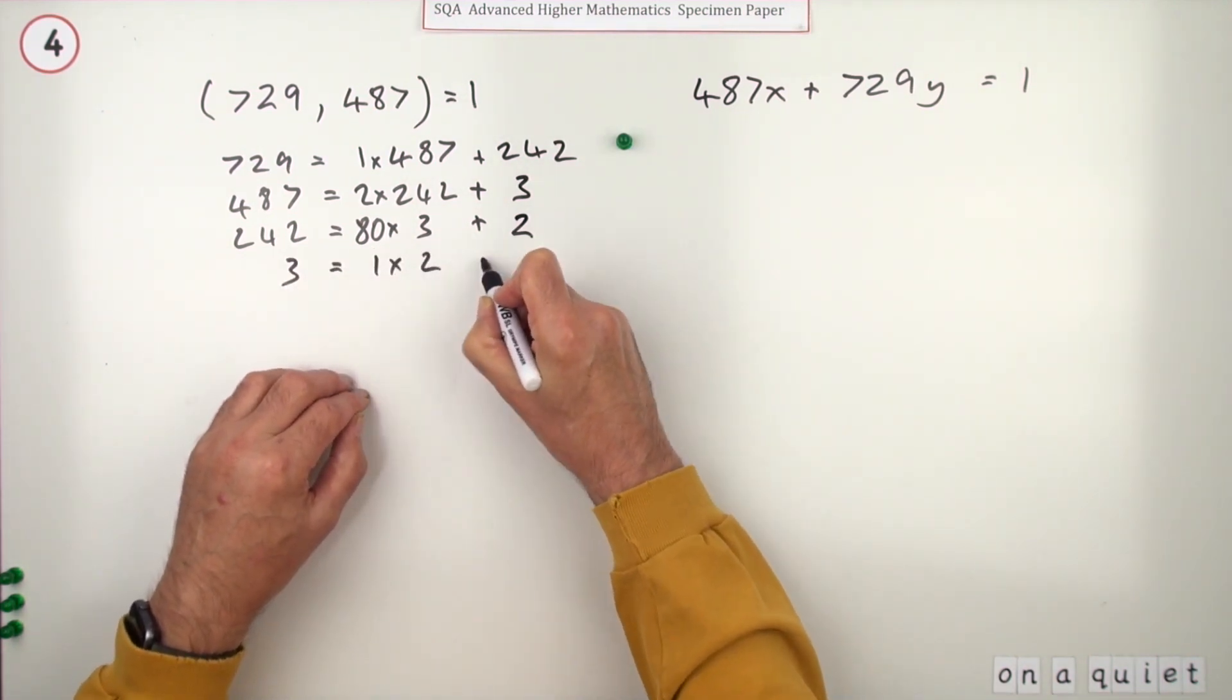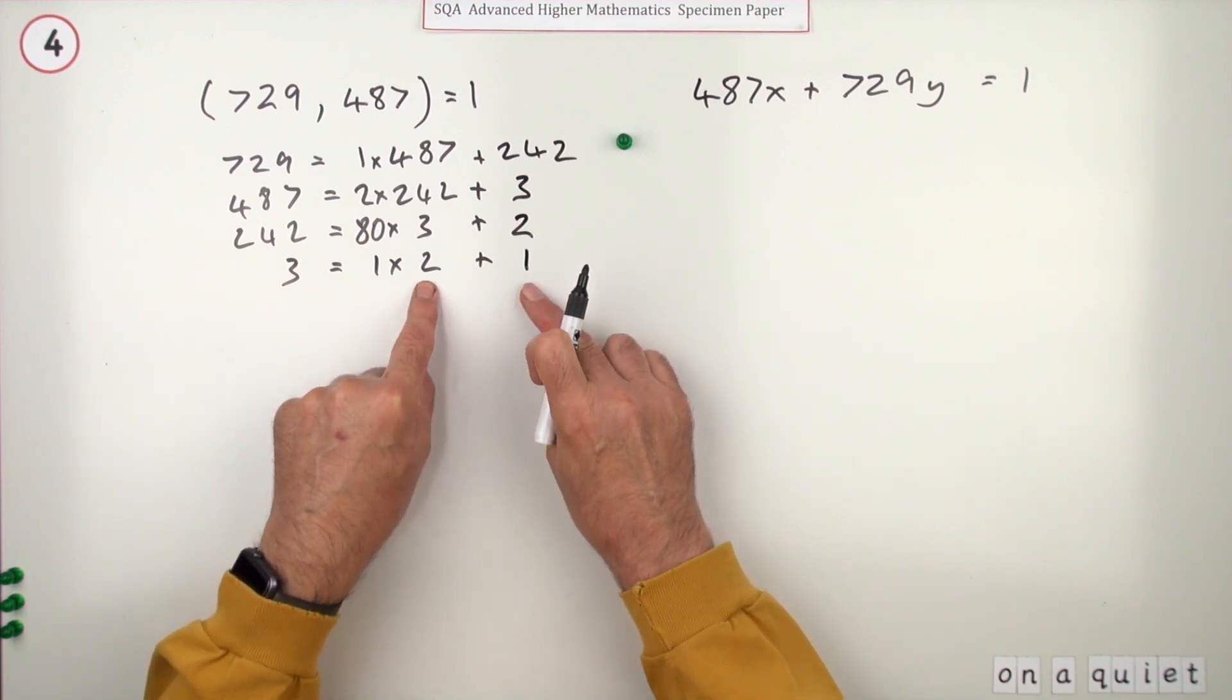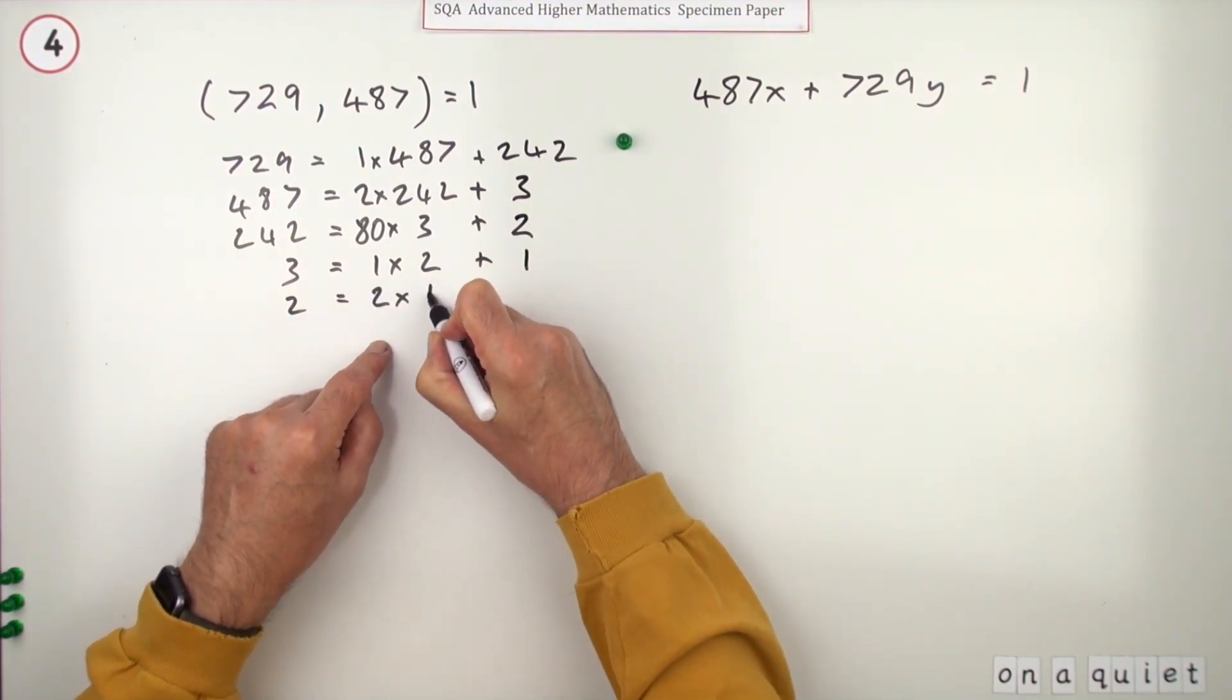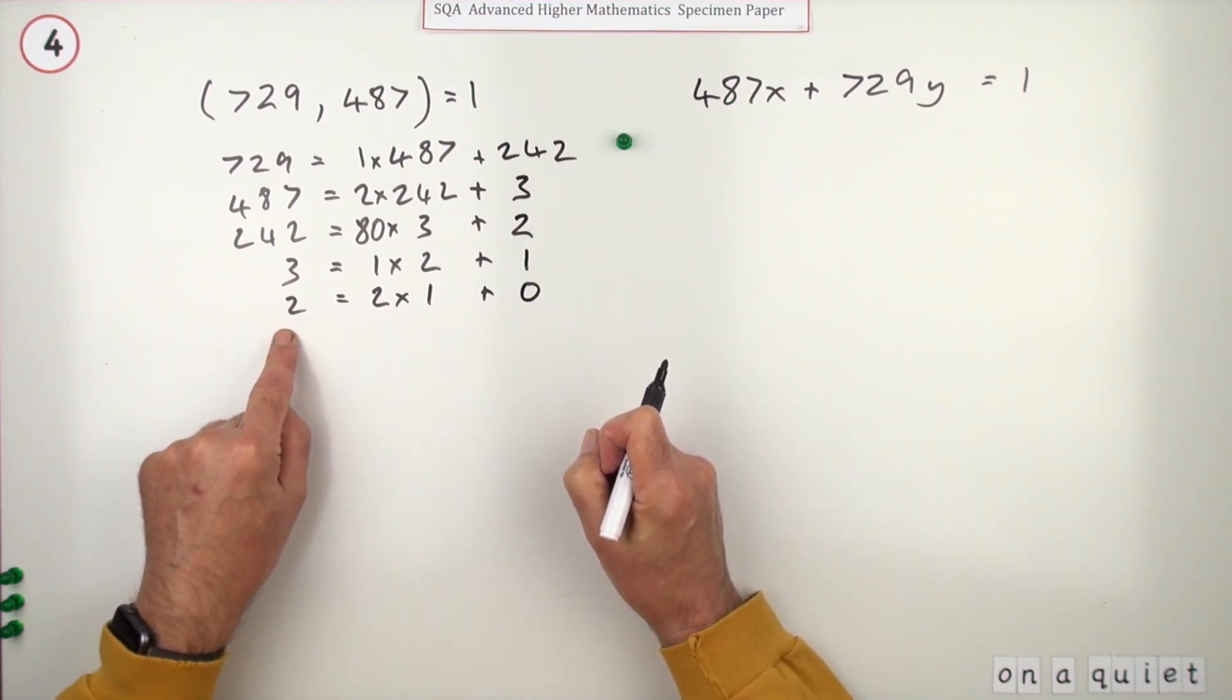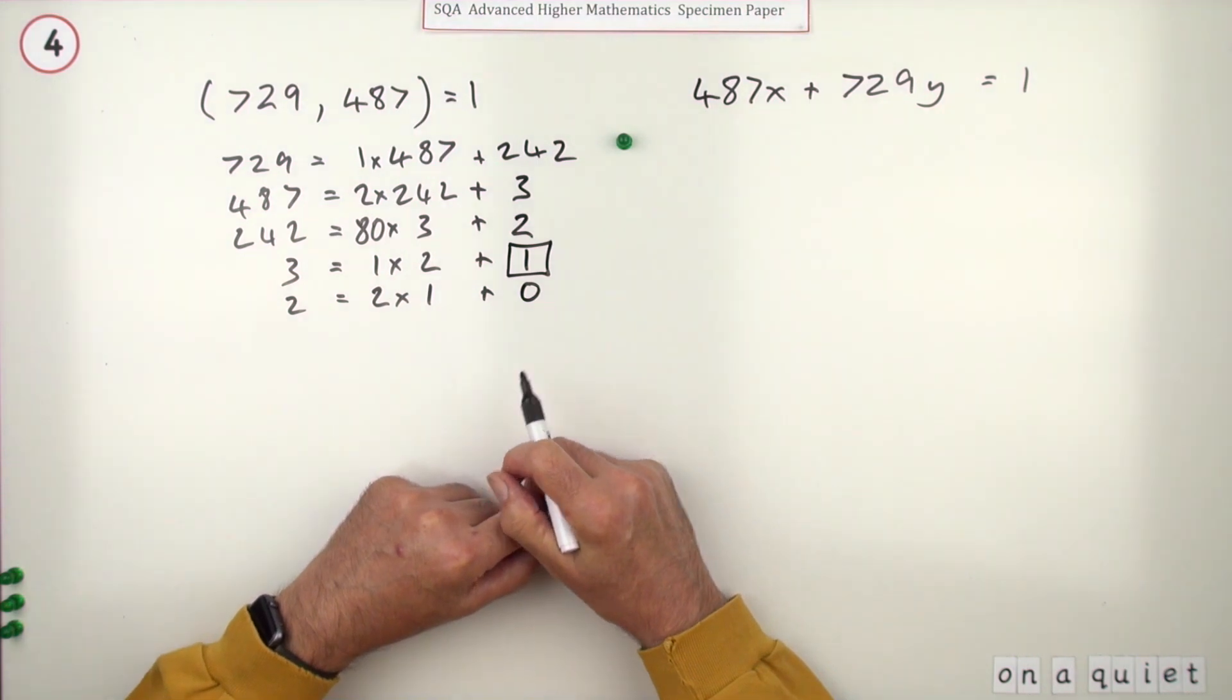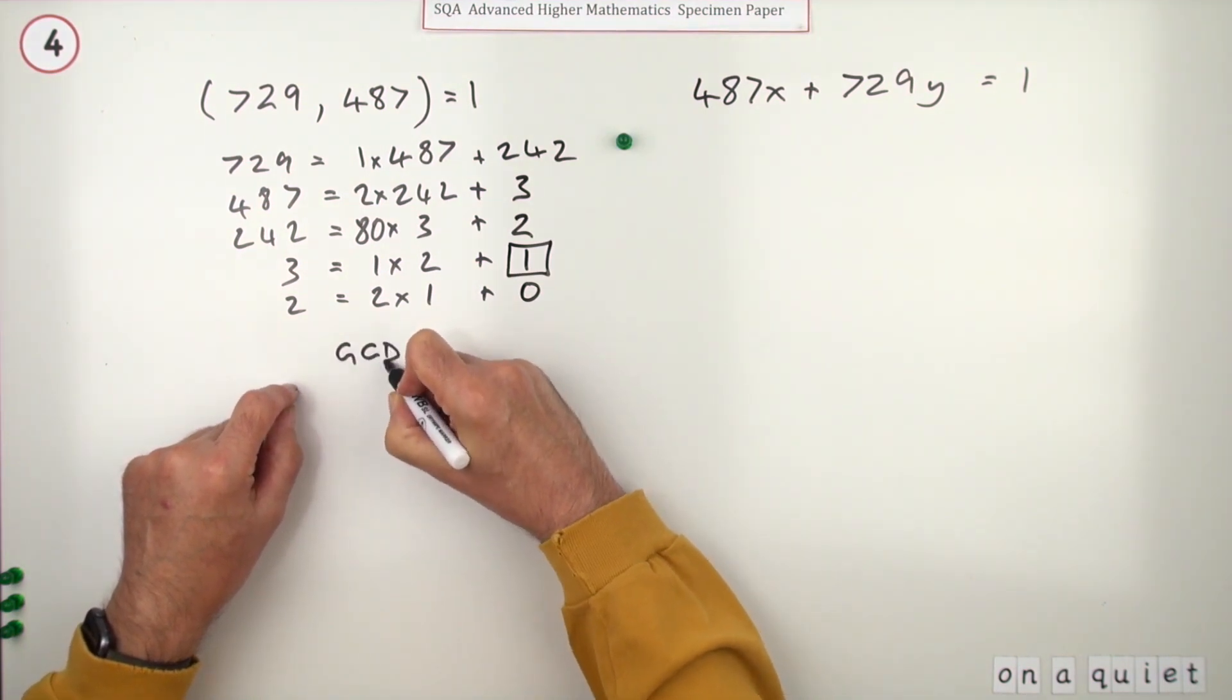You already know the answer because you look at 3 and 2 - what's the biggest number that goes into 3 and 2? Obviously 1. But I'll carry on: 3 = 1×2 + 1. If you carried it on, 2 = 2×1 + 0. As soon as you get zero, that means it divided exactly, so the answer is this last number before the remainder was zero.